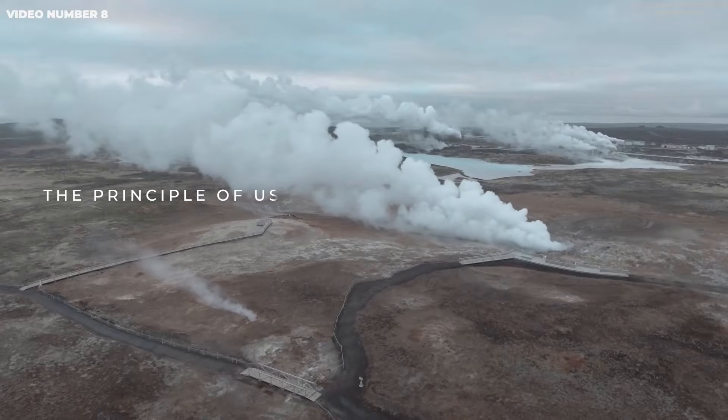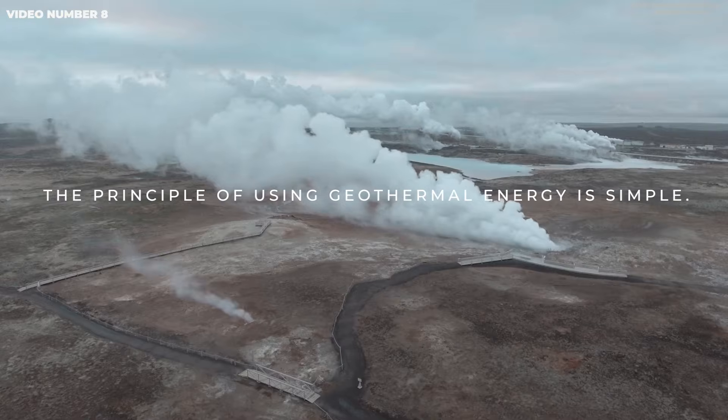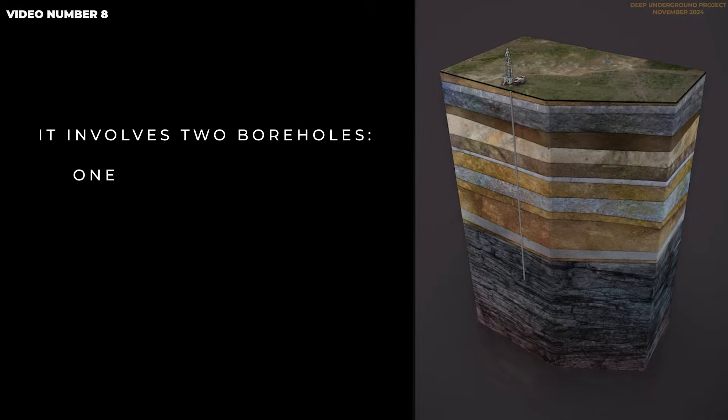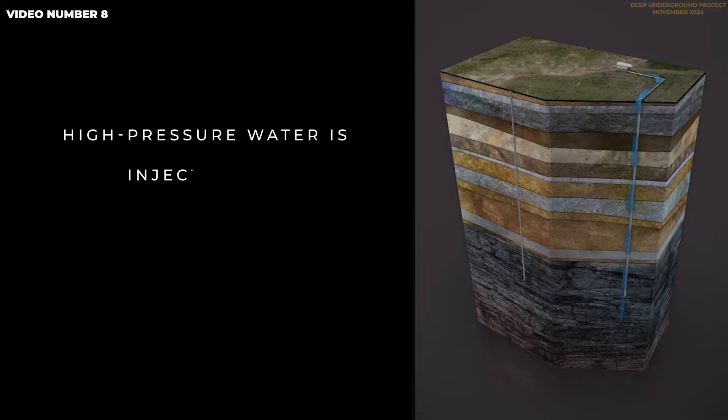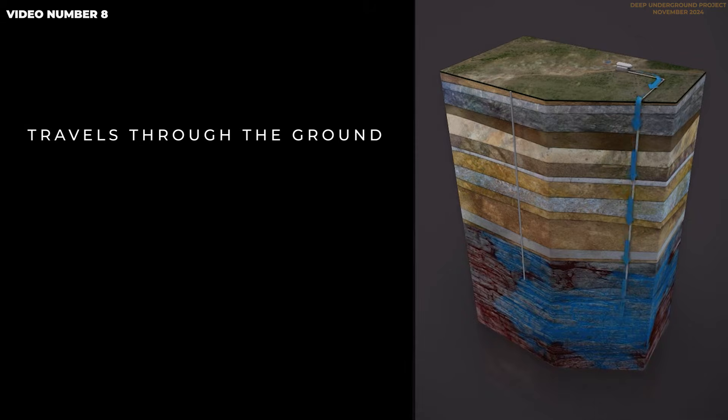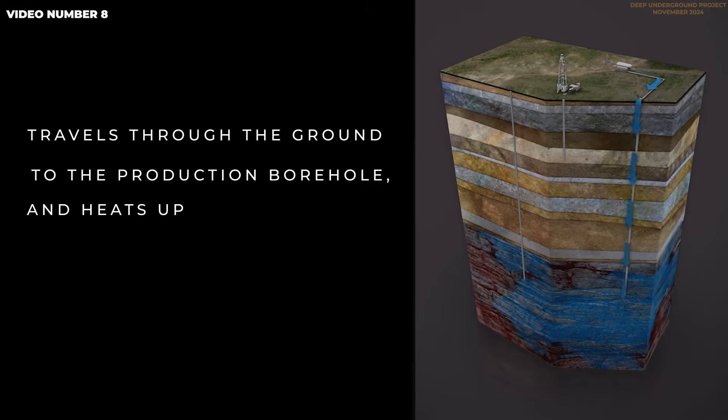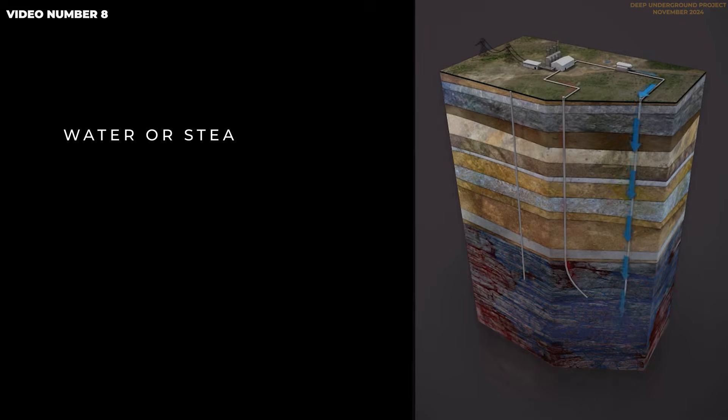The principle of using geothermal energy is simple. It involves two boreholes: one for injection and the other for production. High-pressure water is injected into the first borehole, travels through the ground to the production borehole, and heats up in the process. Water or steam is then pumped up from the production borehole to generate electricity on the surface.